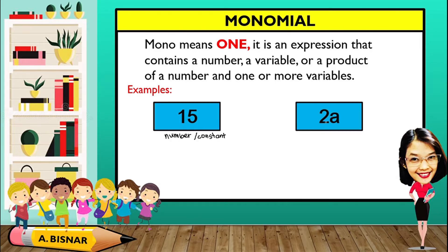Next, say we have 2a. 2 is a number and a is a variable, so we have a product of a number and a variable. Since this is a product of a number and a variable, it is also considered as a monomial.